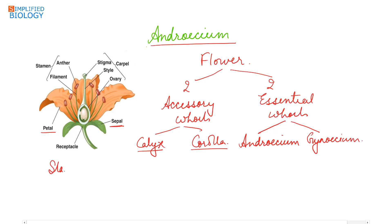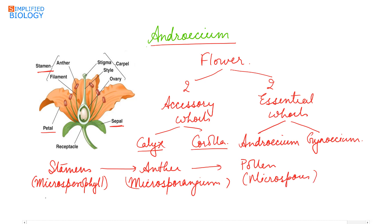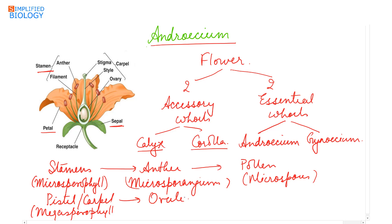Androecium is made up of stamens. Stamens are modified microsporophylls. They consist of the anther, which is the microsporangium, inside which the pollens — the microspores — are produced. Gynoecium is made up of pistil or carpel, which is a modified megasporophyll. Inside the ovary of the pistil, ovules are formed, which is the megasporangium, and inside the megasporangium develops the megaspore.